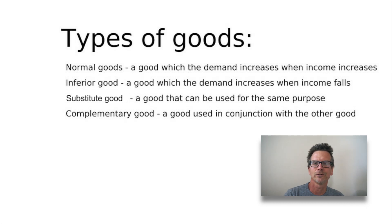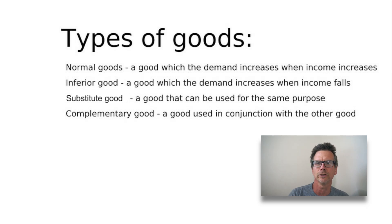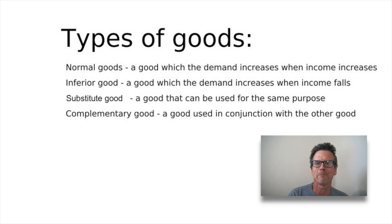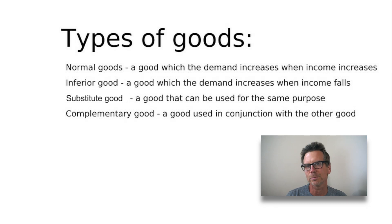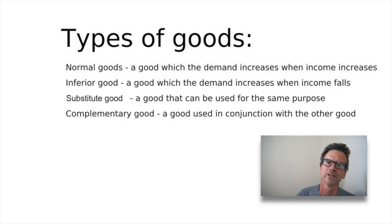Before we get into the five shifters, we need to understand some basic differentiation between goods. A normal good is one where demand increases when income increases — you have more money, you want to buy more of it. An inferior good is one where you have more money, you want to buy less of it. A substitute good is one you can swap out — like apples or bananas. And a complementary good is one that goes together with another, like ketchup and hamburgers.